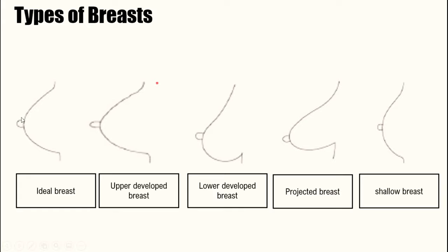An ideal breast is good looking and it fits into nice bras. For an ideal breast, the nipple and the areola are prominent and they are very attractive. We also have the upper developed breast. In this type, the upper pole of the breast is very full and rounded compared to the lower parts. For the lower developed breast, it is the opposite — the lower part is fuller than the upper parts, and the breast tissue is concentrated at the lower parts of the nipple.